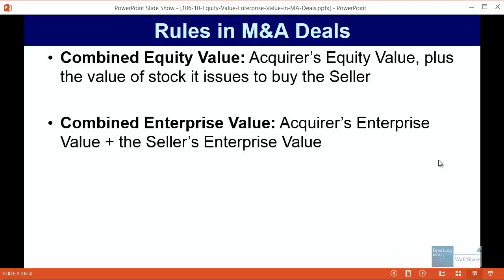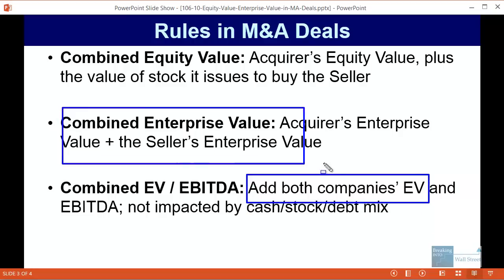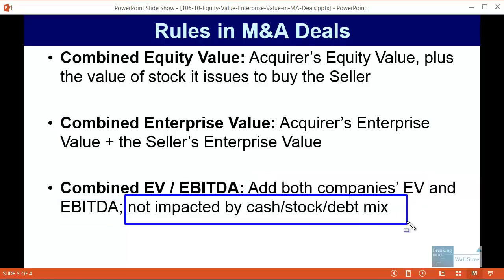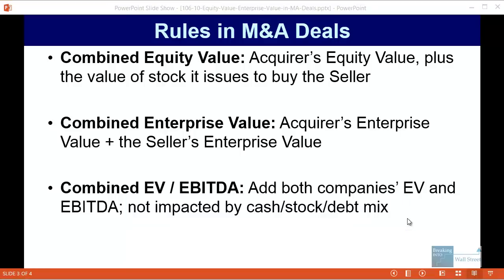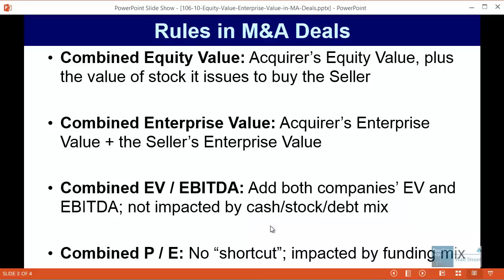For common multiples such as EBITDA and PE: the combined enterprise value to EBITDA multiple is calculated by adding both companies' enterprise values and dividing by the sum of both companies' EBITDAs. This is not impacted at all by the purchase method — cash, stock, debt, or any combination. Regardless of how the buyer acquires the seller, this stays the same. For the combined PE multiple, there is no shortcut — it is actually impacted by the mix of cash, stock, and debt, so you need to calculate it directly.